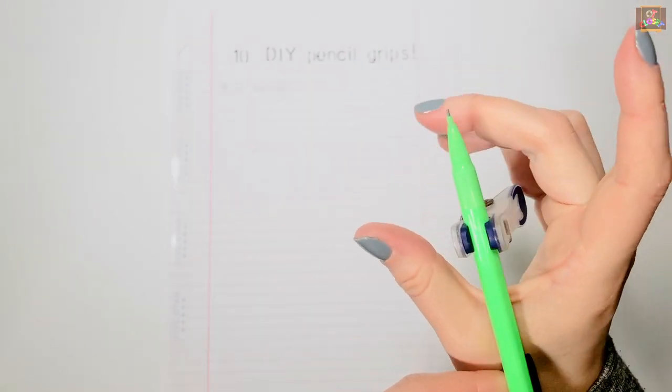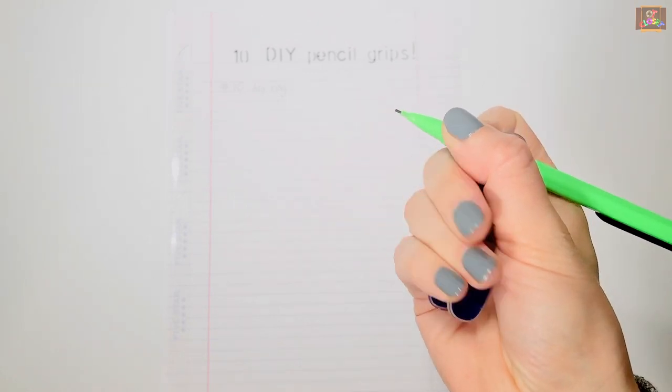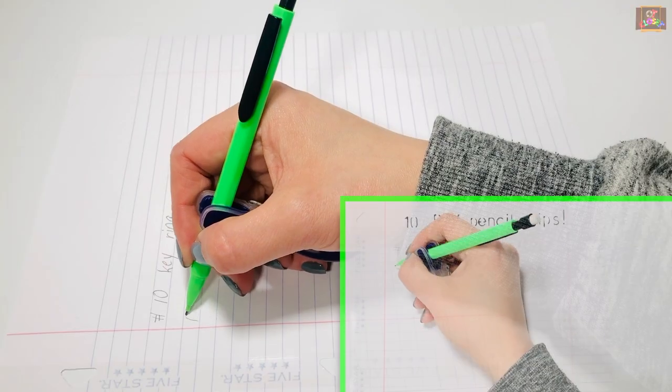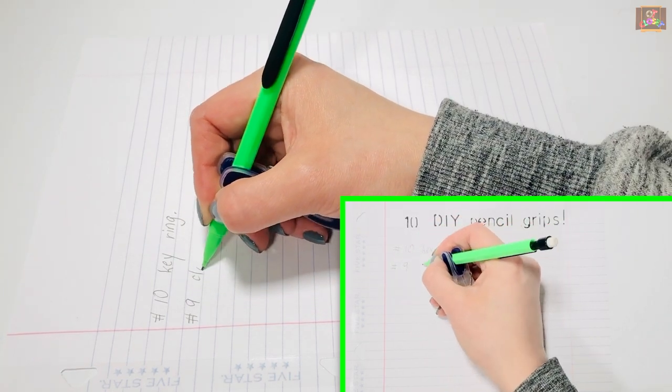Number 9: Clothespin. Clip it to the shaft of the pencil and secure the clothespin against your palm. This grip support prevents a child from forming a fist around the pencil.